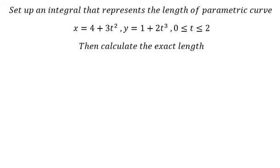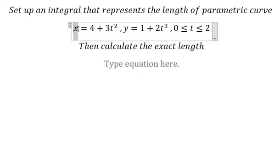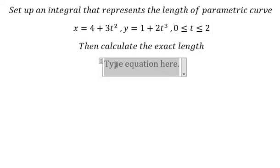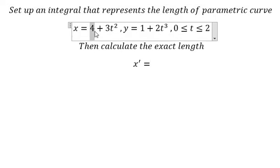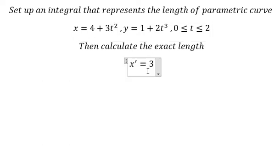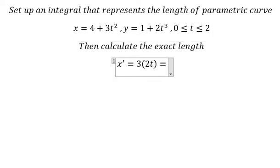First, we need to find the first derivative of x. This one is about the constant, so you get 0. This one we have 2t, so we have 6t.